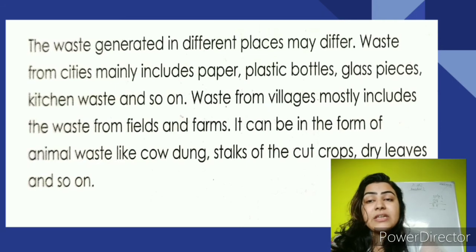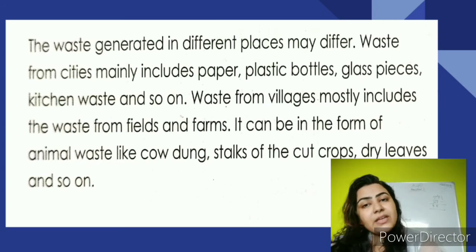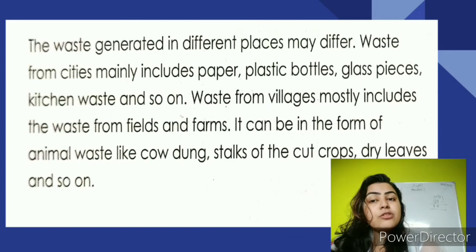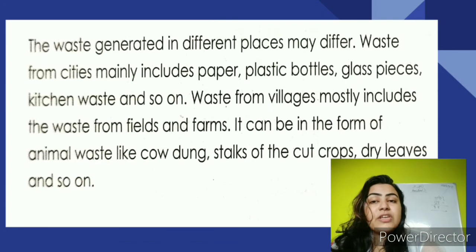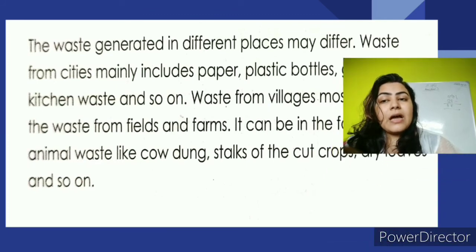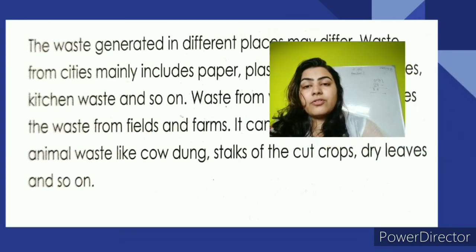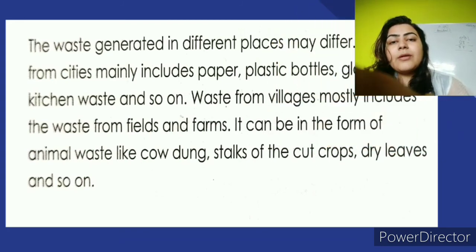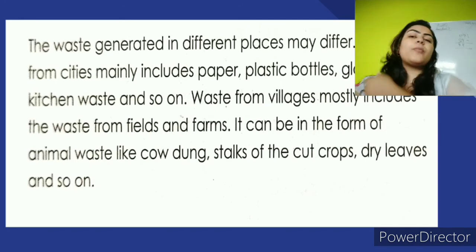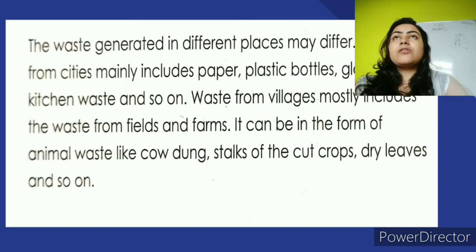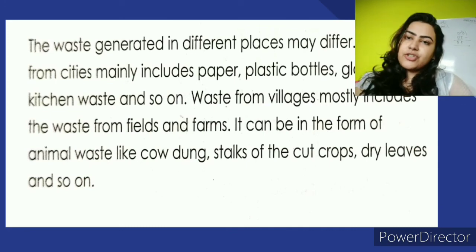The waste generated in different places may differ. Waste from cities mainly includes paper, plastic bottles, glass pieces, kitchen waste, and so on. Waste from villages mostly includes waste from fields and farms — animal waste like cow dung, stalks of cut crops, dry leaves, and so on. All of these are categorized into solid waste, liquid waste, and gaseous waste.